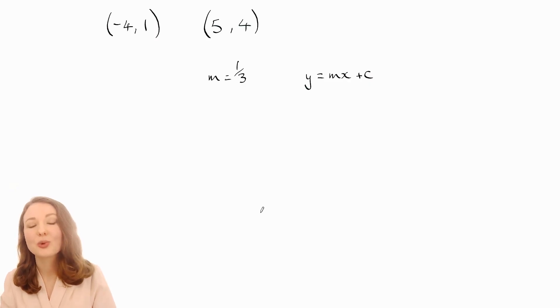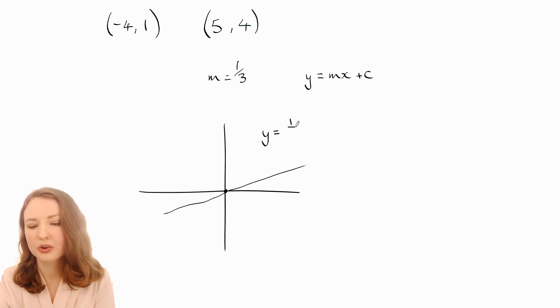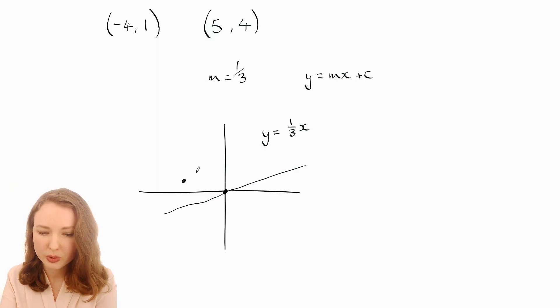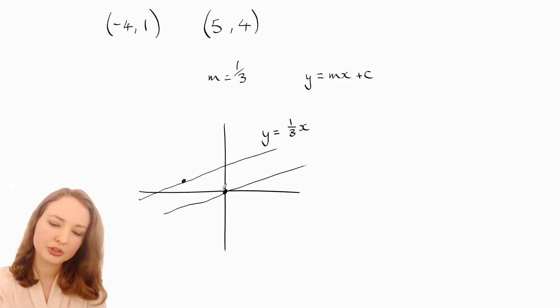Now another way that you could work out that same equation is something which I think you probably haven't covered yet but I thought I'd mention it anyway. What we could do is imagine a line that passes through the origin and has that slope 1/3 so that would look something like that and that would have the equation y equals 1/3x. You can tell that that passes through the origin because if you plug in x equals zero you get y equals zero so it has to pass through the point (0, 0). Now we don't want this though what we want is for it to pass through (-4, 1) so we want to have that line which is the same as this line but shifted across.